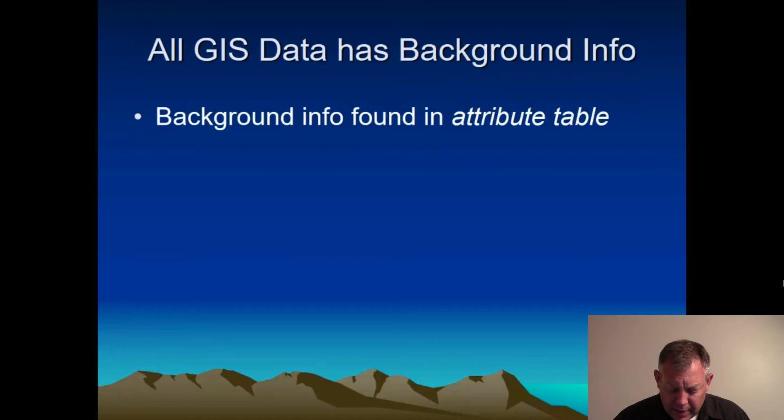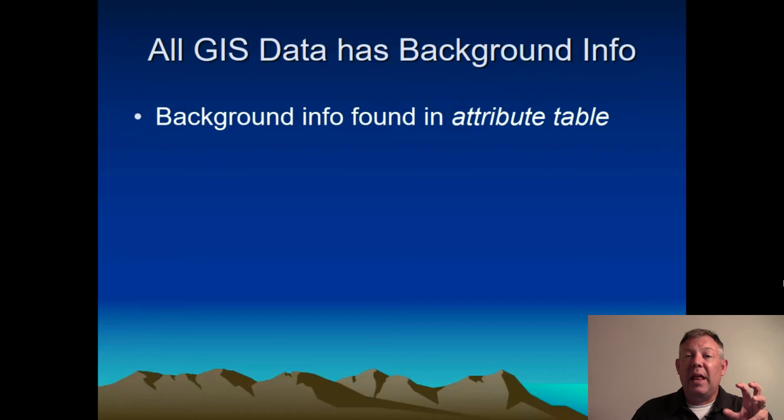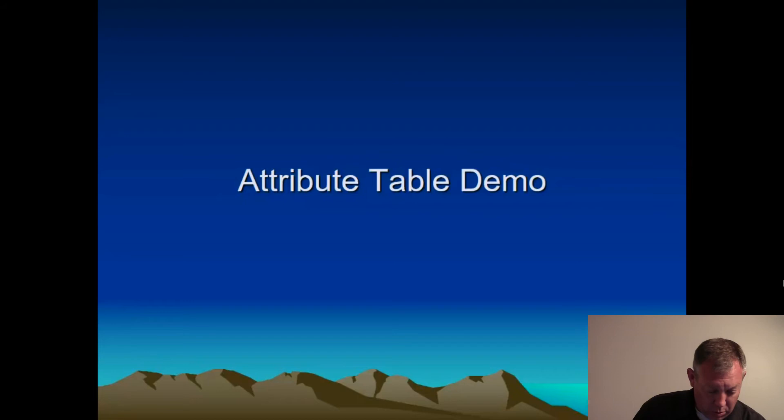That background data is stored in something called the attribute table, and we'll work with the attribute table quite a bit. When you're in the software you can open up that attribute table and look at this information and work with it. Let me give you an example of what it looks like when we look at this attribute table data.